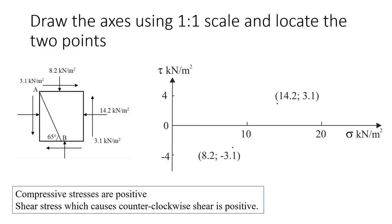We'll start with the first example. The first thing to remember is that compressive stresses acting on a cell element are positive. In some courses like structural engineering, compressive stresses are negative, but in soil mechanics and geotechnical engineering, compressive stresses are positive. Here we have sigma y on one face and sigma x on another face, and we also have shear stresses sigma x-y and sigma y-x acting on the soil element on each side.